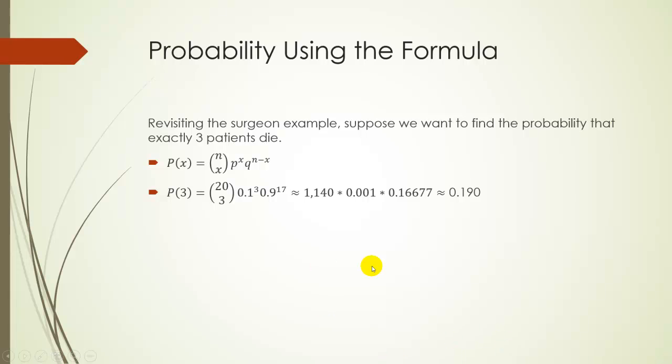Plugging those into our formula, we have 20 choose 3 for combinations, 0.1 raised to the third power, and 0.9 raised to the 17th power, because 17 patients are going to live if three patients are dying. Anyway, honestly, I did this in my calculator. I just used number of combinations, 20 choose 3, and I got 1,140. And then just did the rest of my calculator, and I get approximately 0.190. So there's approximately a 19% chance that exactly three patients will pass away from the surgery.